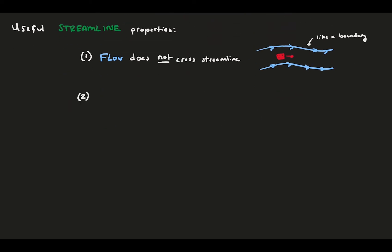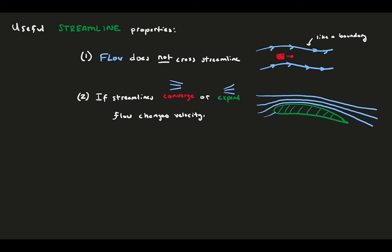Second, if you have streamlines squeezed together or spread apart, that means that the flow velocity must have changed. Let's plot streamlines over an airfoil. We'll see that above the foil, the streamlines squeezed together, representing that the flow accelerated over the top of the foil. Another way to interpret this is if you treat the streamlines as boundaries. If the streamlines squeeze together, that means the space between the streamlines that the flow must pass through gets smaller. And if so, in order to keep the same mass flow rate, it has to accelerate.